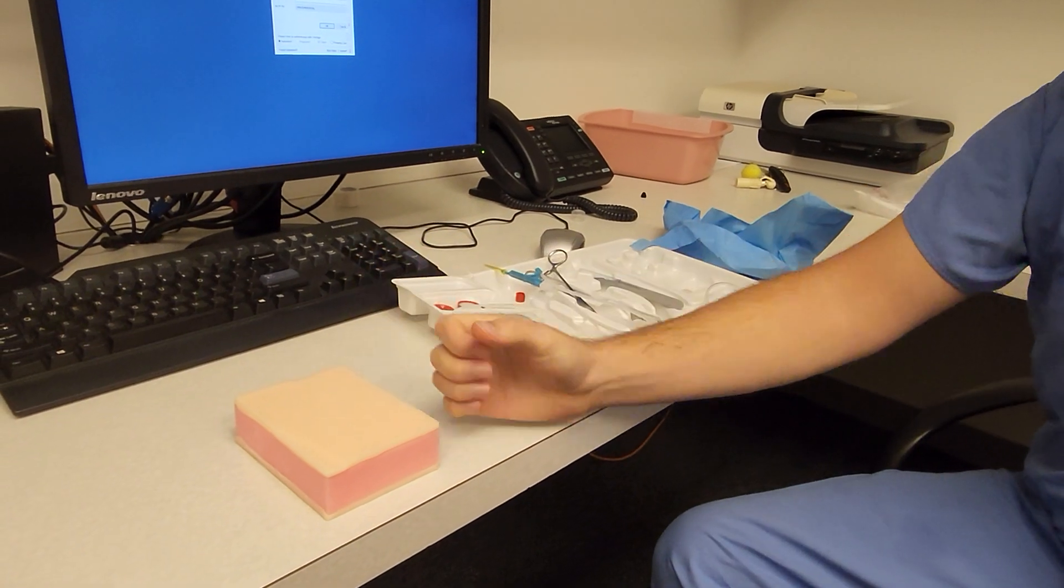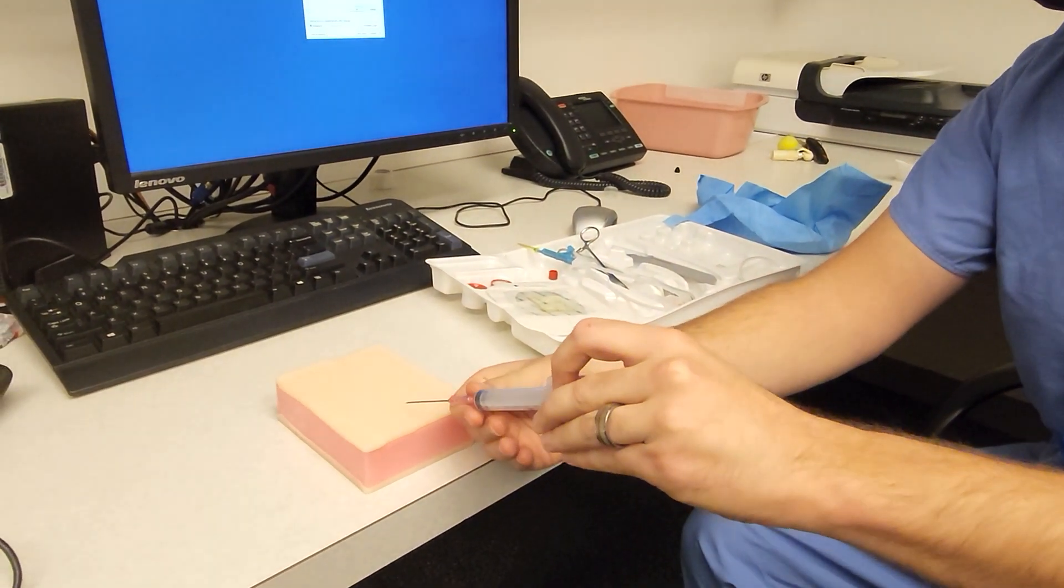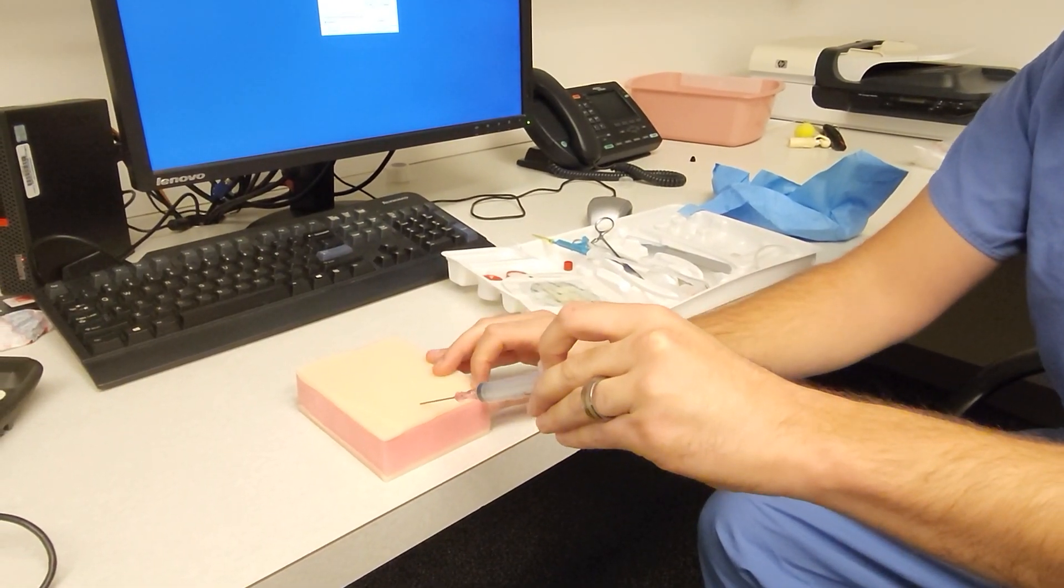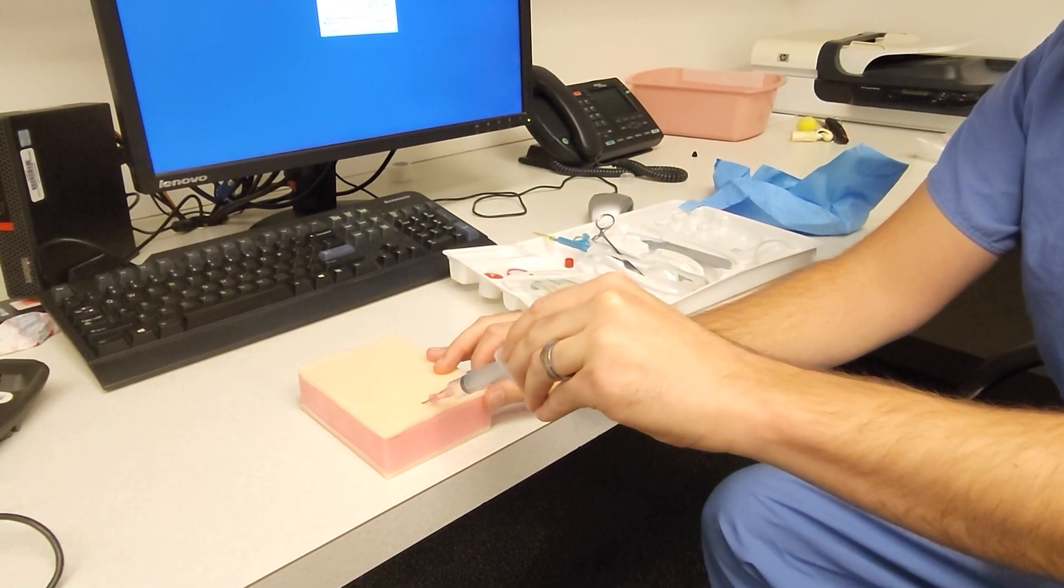You're going to use the ultrasound to look for the artery and then same technique as a central line except going at a much shallower angle, aspirating as you insert until you get flow.